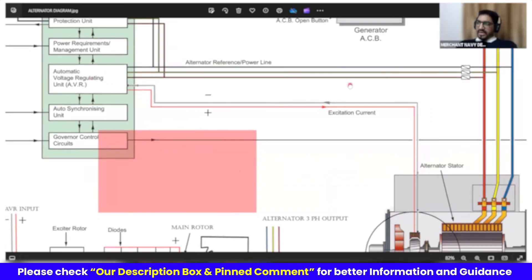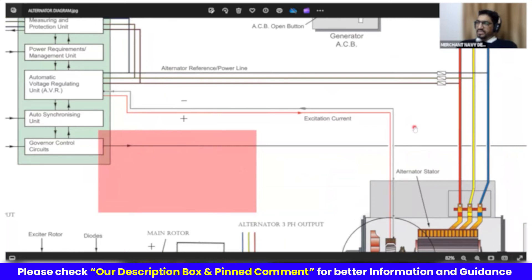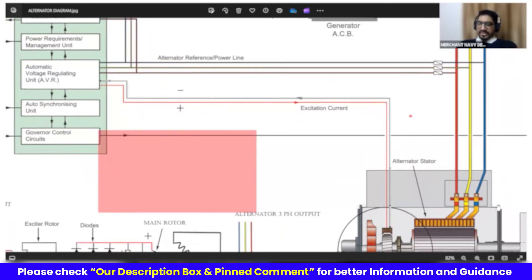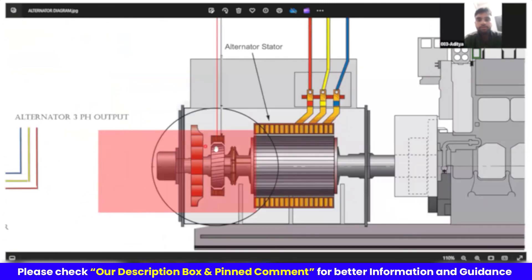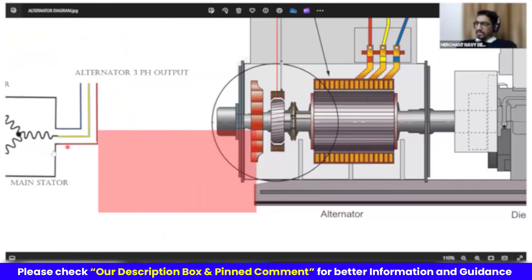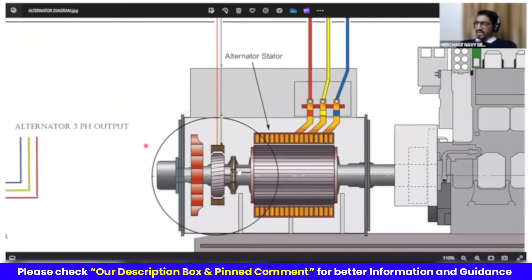But if somebody asked, suppose the generator was just - it was not running. You just switched on the generator. That time, it doesn't have any power. If you do not have any power, then there is nothing input to AVR. If nothing input to AVR, there is nothing output of the AVR. That means you do not have anything here. You do not have anything coming here.